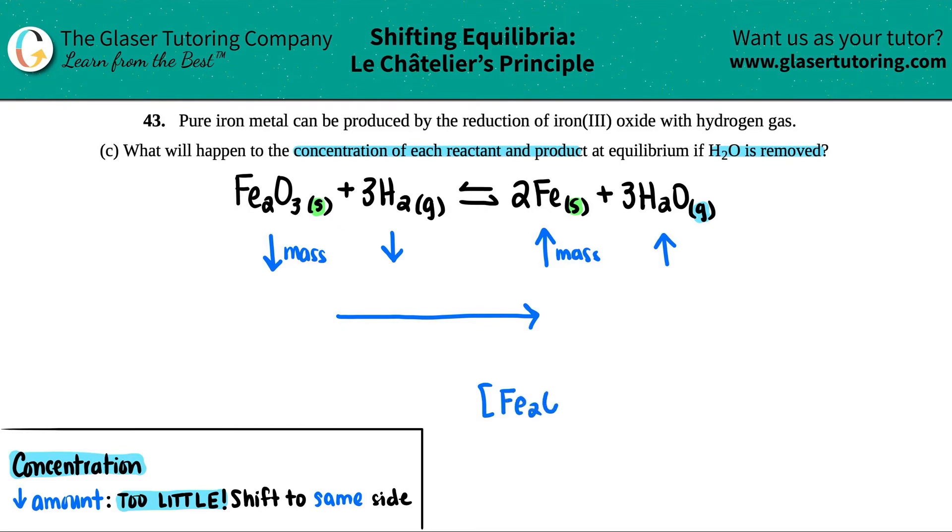So when it comes down to what's going to happen to the concentration of Fe₂O₃—I'll start writing it down here—Fe₂O₃ and the concentration of Fe, since they both are solids, the concentration is not going to change, just the masses change. So I'm going to say no effect and no effect, or you could say no change.